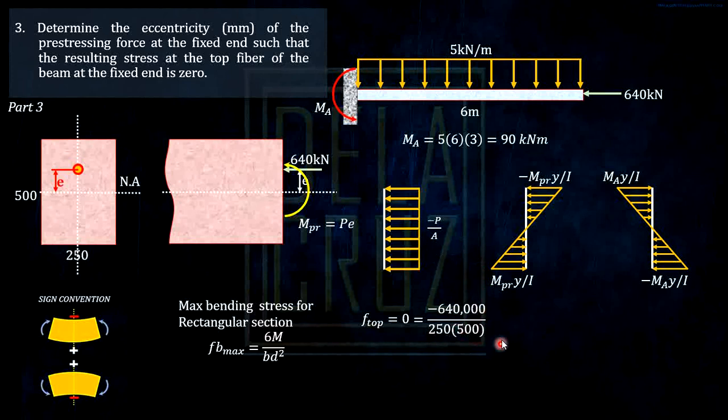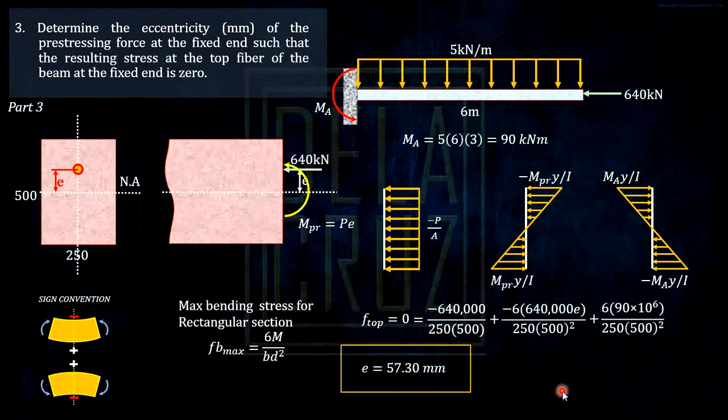This is negative P over area, plus negative, let's use the formula for rectangular cross-section: 6M over BD squared. Take note, the M here in the second term is the prestressing moment, P times E: 640 times E expressing E, then BD squared is 250 times 500 squared. And lastly, 6M over BD squared. As you see, the only unknown here is the eccentricity E, and using our calculator, E must be 57.3 millimeters.